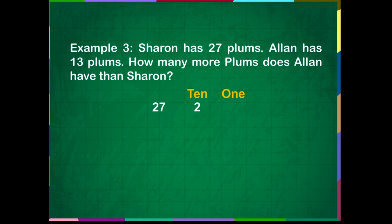As we know, 27 is equal to 2 tens and 7 ones. 13 is equal to 1 tens and 3 ones.